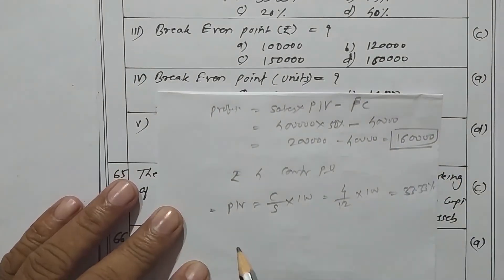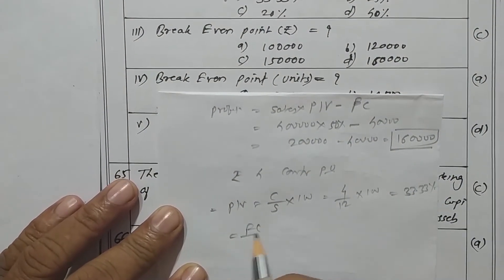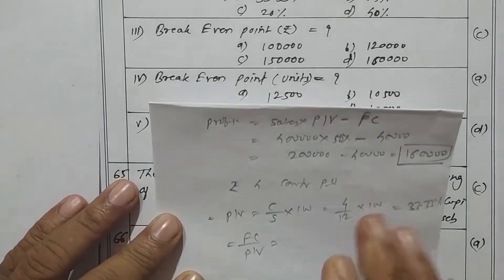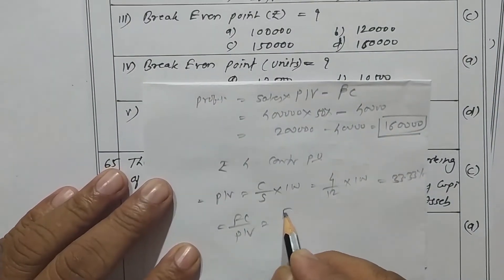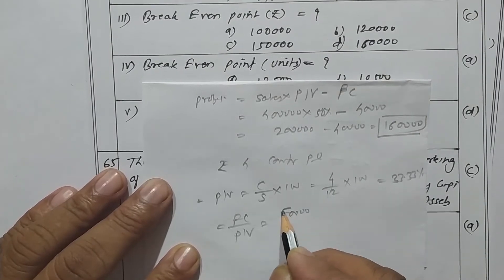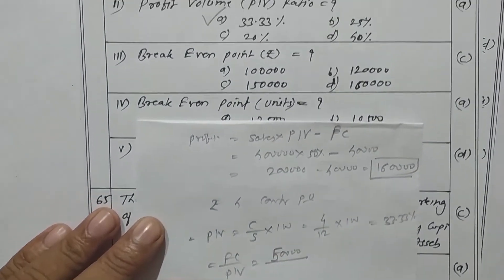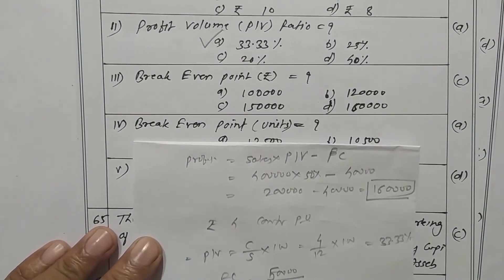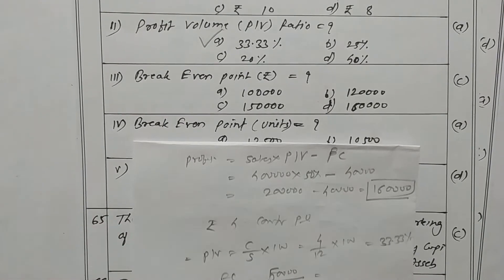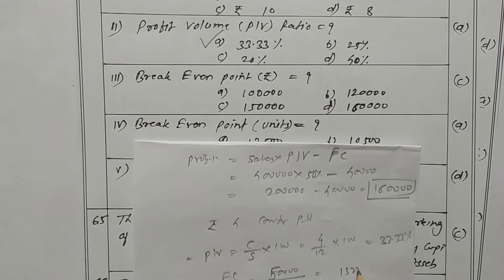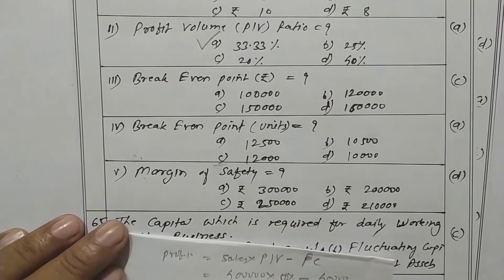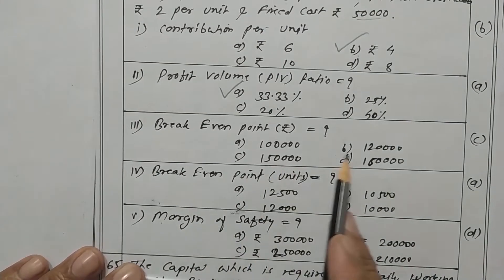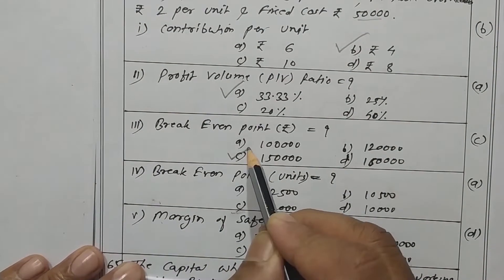Now what is the break even point? Formula is fixed cost upon PV ratio. Fixed cost is rupees 50,000 and PV ratio is 33.33 percent, so the break even point is rupees 1,50,000. Option C is the correct one.